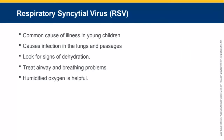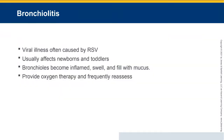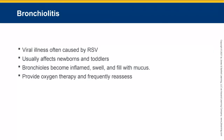Respiratory syncytial virus (RSV) is a common cause of illness in young children. It causes an infection in the lung and the breathing passages and leads to bronchiolitis and pneumonia. It's very contagious. We assess for signs of dehydration because it is accompanied by a severe sore throat and children don't want to eat or drink anything. Treat airway and breathing problems as appropriate. Bronchiolitis, caused by RSV, usually affects newborns and toddlers — the bronchioles become inflamed, swollen, and filled with mucus. Provide oxygen therapy and frequently reassess for signs of respiratory distress.